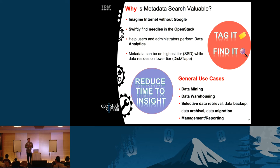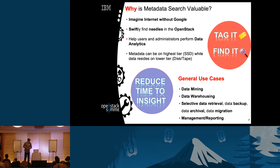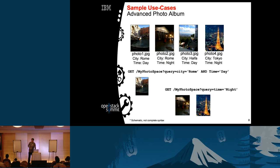Metadata search is valuable because if you have hundreds of petabytes of objects and no way to find them, it's like the internet without Google — you'd have to remember where everything was. It's like having a Linux system with all this file data but no find command. The goal is to support large object stores with millions or billions of files and find that needle in the haystack. Use cases include data mining and data warehousing — identifying key pieces to analyze with Spark or other frameworks without scanning all objects.